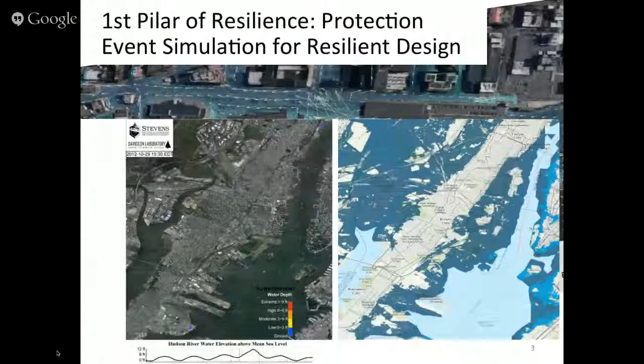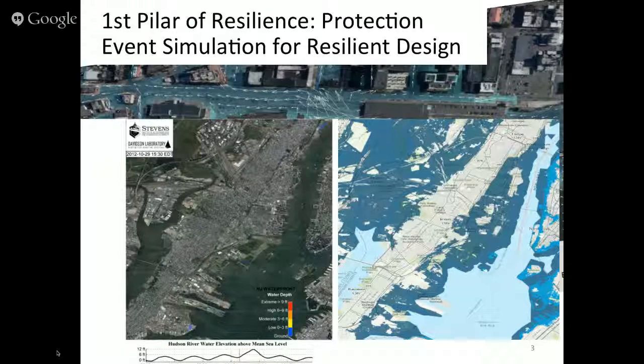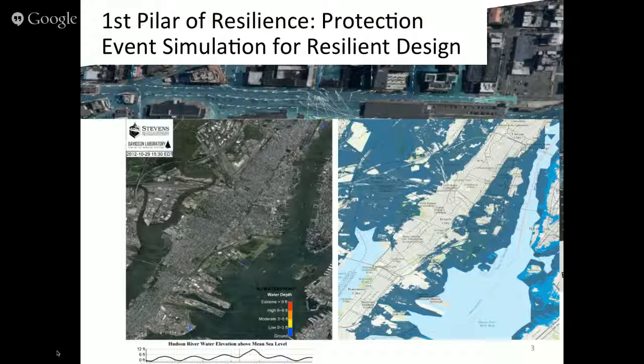I'm going to talk about our pillars of resilience. One example is the coast of New Jersey opposite Manhattan — this is New York City, and my laboratory is right here. When Hurricane Sandy came, this is what the water looked like on top of the land — all this area covered with water, many parts of lower Manhattan covered with water. The question is: what are we going to do to protect ourselves from the next event, which certainly is going to come?